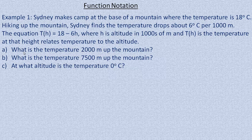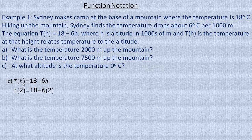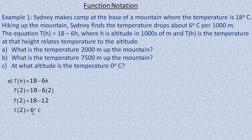We're going to answer three questions. In part A, what is the temperature 2,000 meters up the mountain? We start with our function: t of h equals 18 minus 6h. We substitute 2 in place of h because it's 2,000 meters. 6 times 2 is 12, subtracted from 18. It's gone down 12 degrees, so at 2,000 meters the temperature is 6 degrees Celsius.